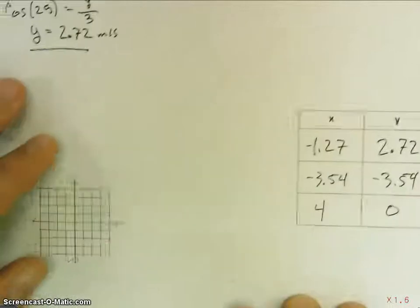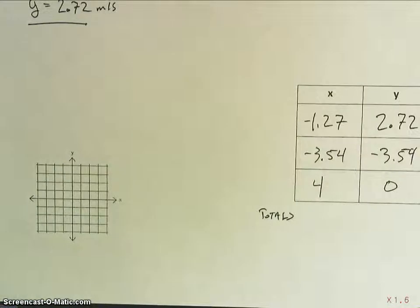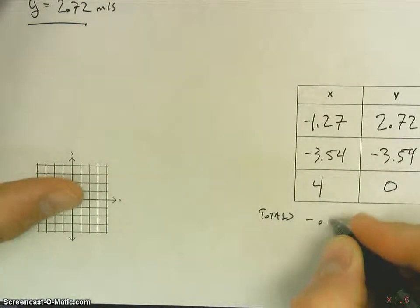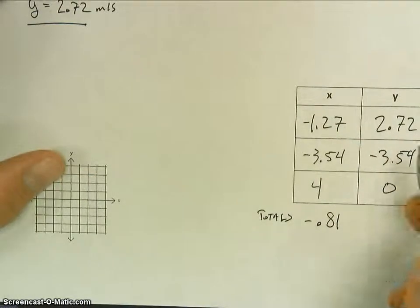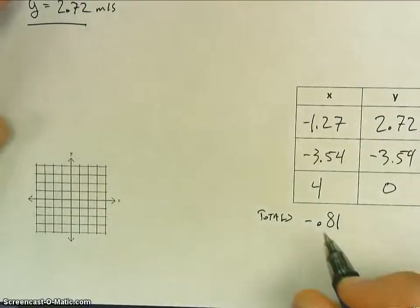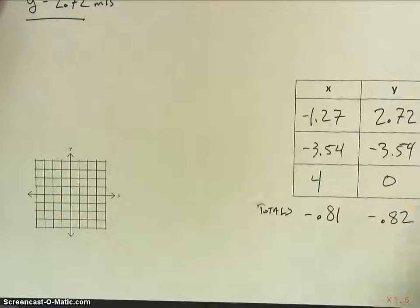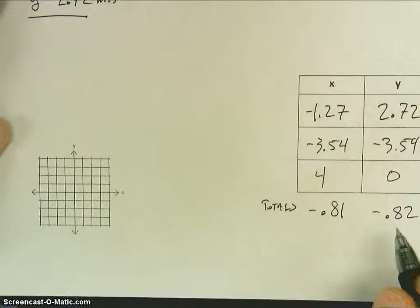So that's that. Now, we have to find our totals. So, negative 1.27 plus negative 3.54 plus 4. Our total in the x direction is going to be negative 0.81. Our total in the y is going to be 2.72 plus negative 3.54. Oh, got an error there. And I also actually get, in this one, negative 0.82. So here's my x total, here's my y total. Now, I have to actually draw those vectors.